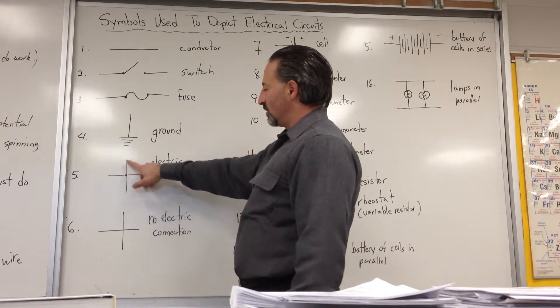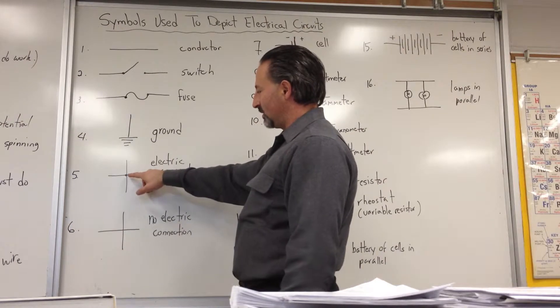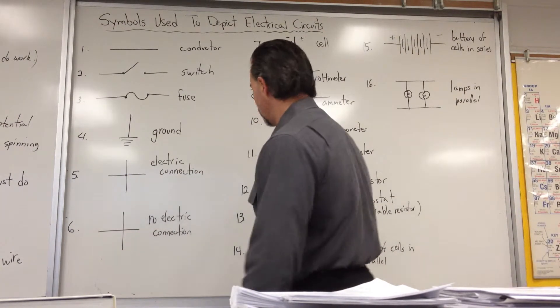An electric connection means the two wires that are crossing. If they have a dot drawn on them, it means they're connected at that point. If there's no dot, it means they're crossing each other with no connection.